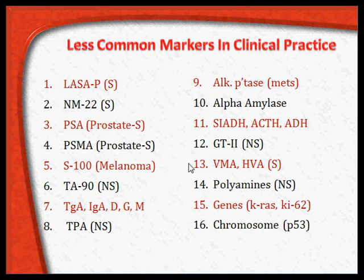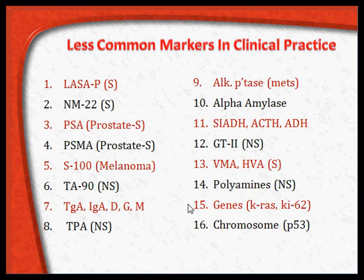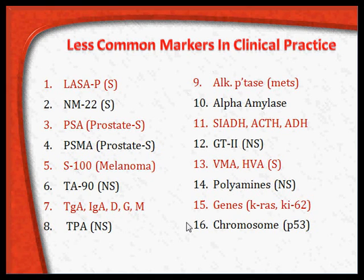Vanillylmandelic acid (VMA) and homovanillic acid (HVA), a derivative of VMA, are very specific for adrenal medullary tumors. Polyamines and genes like KRAS and chromosomes such as P53 and the Philadelphia chromosome are also important markers. While some of these are less commonly used, PSA, PSMA, and VMA are very commonly used in clinical practice.